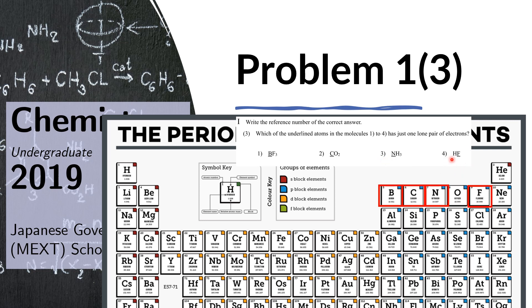Just to check number four: F (fluorine) has seven valence electrons, and one forms a bond with hydrogen. That leaves six remaining electrons, and those six form three lone pairs. So this is not the answer — the answer is number three.